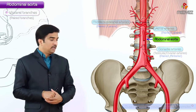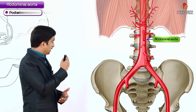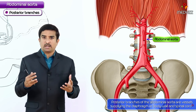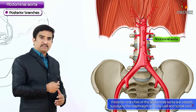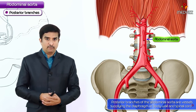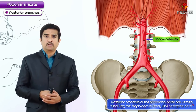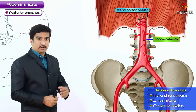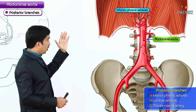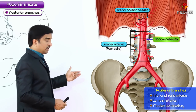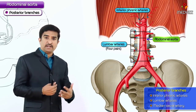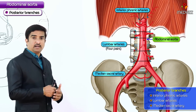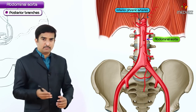The posterior branches of the abdominal aorta supply the diaphragm, posterior body wall, and spinal cord. These posterior branches consist of the inferior phrenic arteries, four pairs of lumbar arteries, and the median sacral artery.